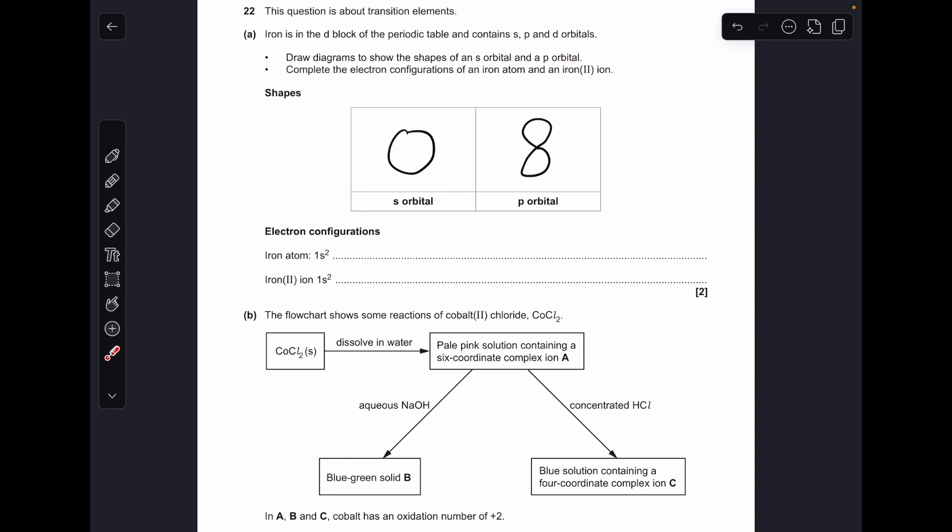You could either draw it vertically like I have, you could do a horizontal one, or you could even draw it on an angle. But it's really important you only draw one p orbital.